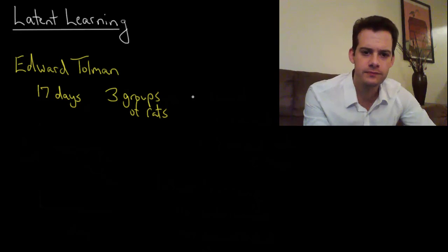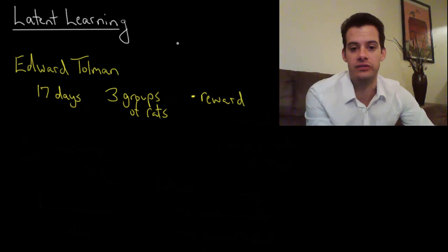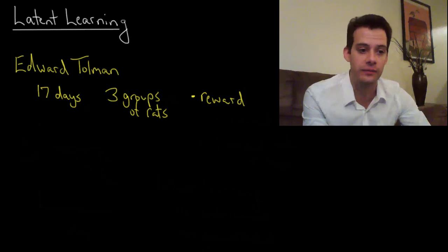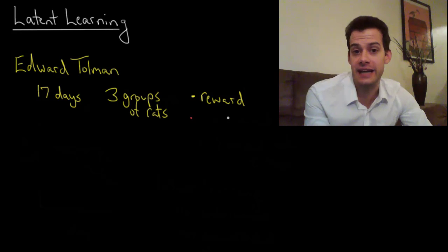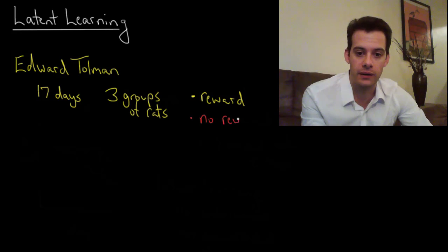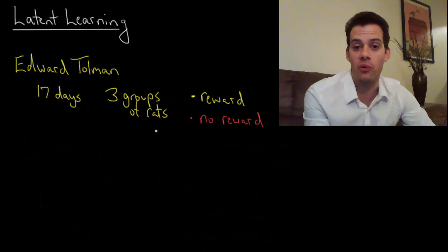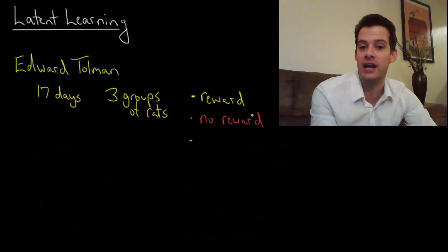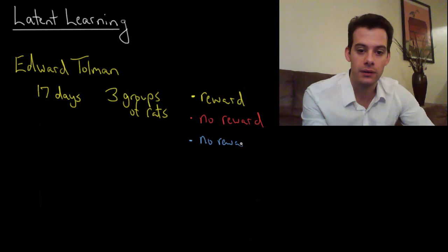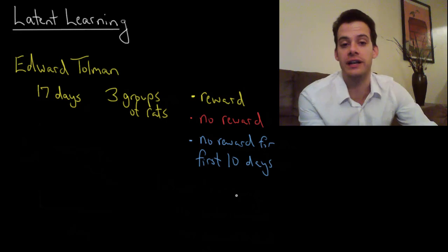What were the three groups of rats? The first group got a reward for getting to a certain point in the maze. The second group didn't get a reward, so as far as these rats were concerned there was no endpoint to the maze. The third group was a combination of these two. They didn't get a reward for the first 10 days and then starting on the 11th day they started getting a reward.